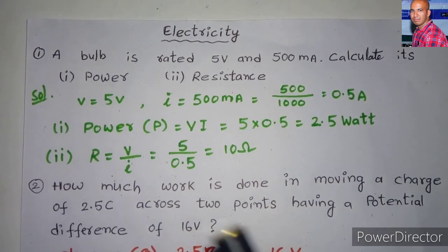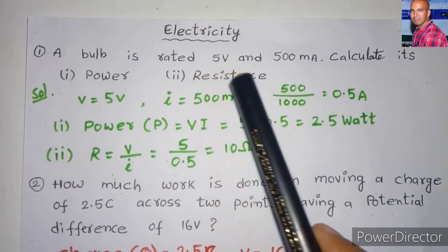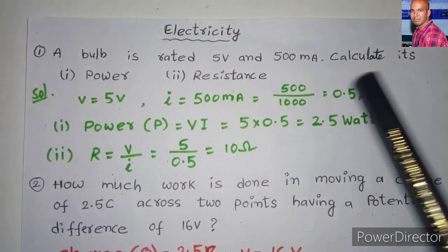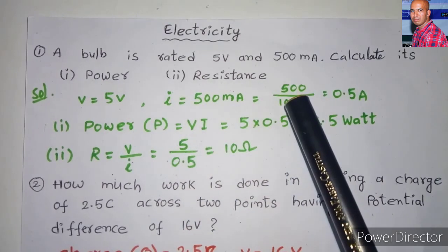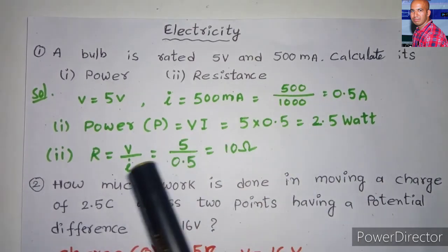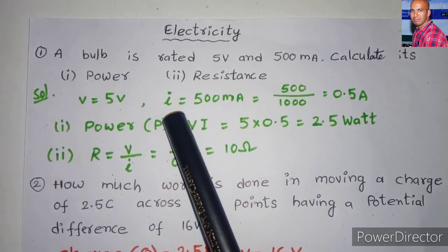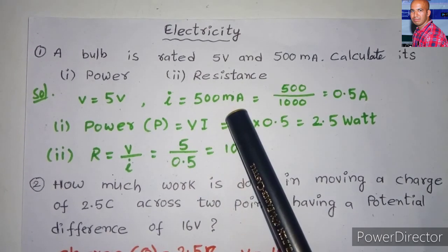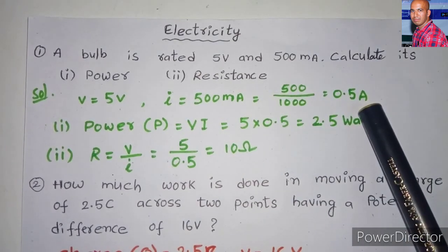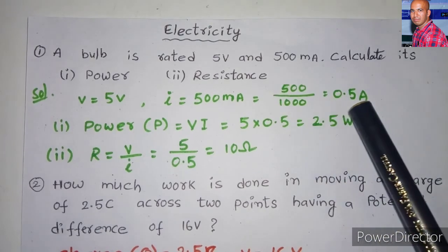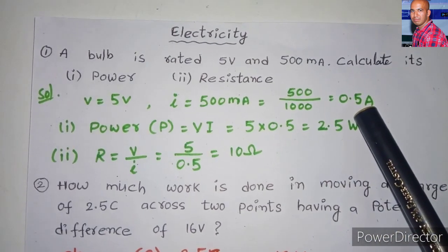First problem: a bulb is rated 5 volts and 500 mA. Calculate its power and resistance. Let us write down what is given. Potential difference is 5 volts, current is 500 mA. Now we have to convert mA into amperes. As 1A is equal to 1000 mA, after converting we get 0.5A.